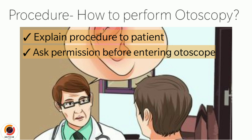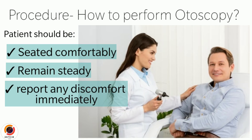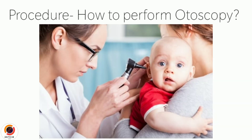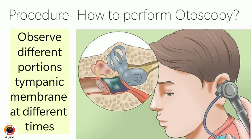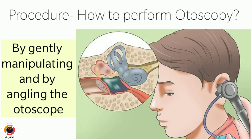Next, the examiner can begin the otoscopic exam by explaining to the patient what he or she is going to do. The examiner should always ask permission before inserting the otoscope into the patient's ear. The patient should be seated comfortably and remain motionless during the examination, and instructed to report immediately when any discomfort or pain is experienced. Young children may need to be held by an appropriate adult. It is usually preferable to examine first the ear least likely to have an observable abnormality. The entire ear canal and tympanic membrane might not be visible at once, so it is often necessary to gently manipulate and angle the otoscope to observe different portions.